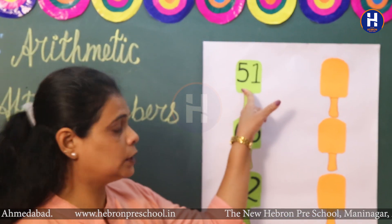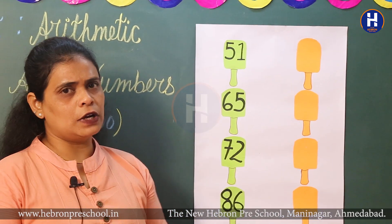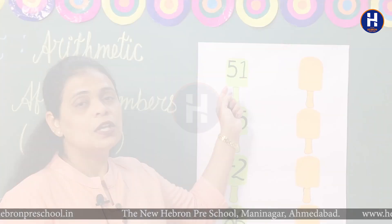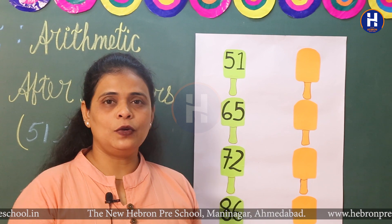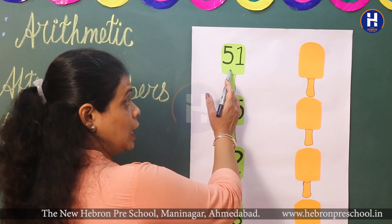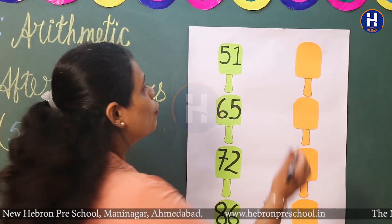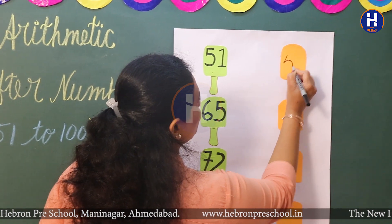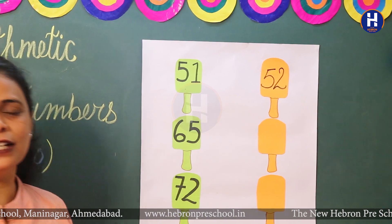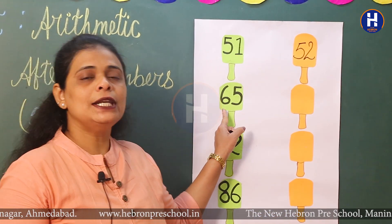In the first ice cream candy, which number have I written? 51. So, let's start forward counting from number 51: 51, 52. So 52 is the after number.